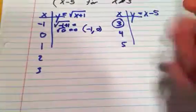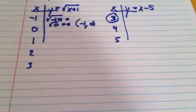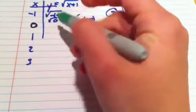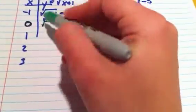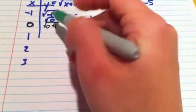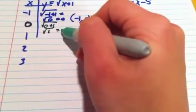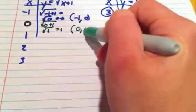And then, let me switch some colors here. Plugging in the 0, I'll have the square root of 0 plus 1 is the square root of 1, which is 1, so I'll have the point 0, 1.